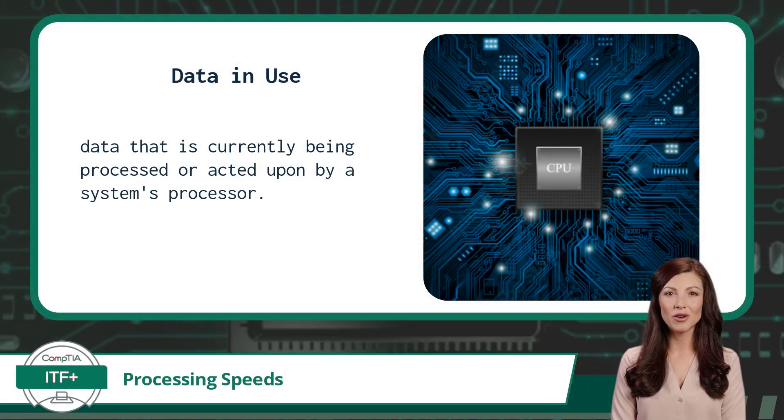Processing speeds are a unit of measure for data in use. Data in use in information technology means data that is currently being processed or acted upon by a system's processor.